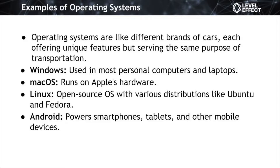One major operating system is Windows, which you find just about everywhere in enterprise environments and small-to-medium businesses. It's quite ubiquitous — like the familiar car many people use for everyday tasks. It's made by Microsoft and comes in different versions like Windows 10 and 11. Then there's macOS, the operating system that runs on Apple hardware like MacBooks and iMacs — more like a stylish, elegant car designed to work seamlessly within Apple's hardware ecosystem, giving it a very distinctive look and feel.